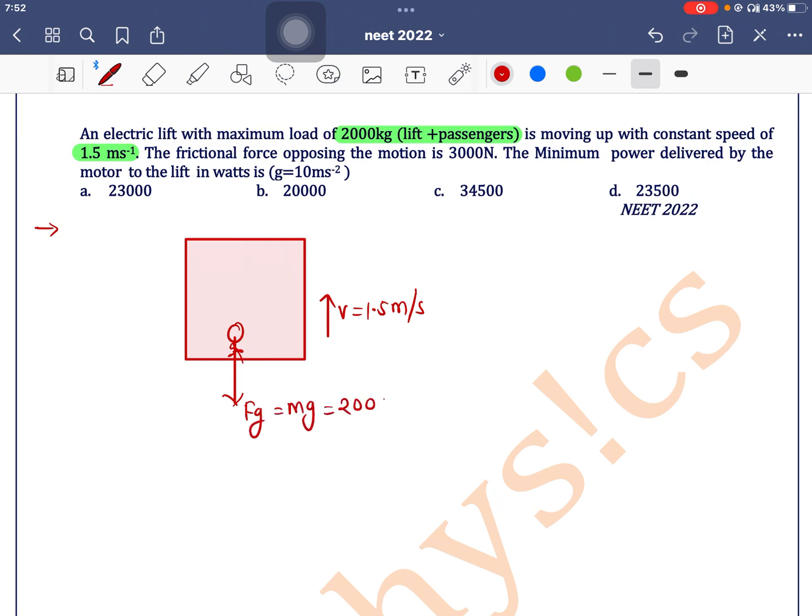mg = 2000 × 10 = 20,000 Newtons. Additionally, there is an opposing frictional force equal to 3000 Newtons. When the motor is connected to the lift, the minimum power delivered by the motor is calculated as follows.